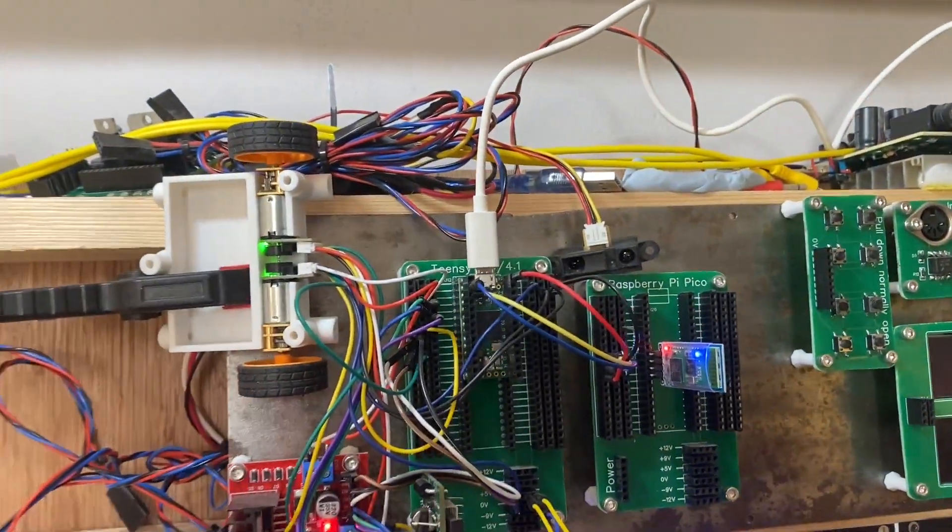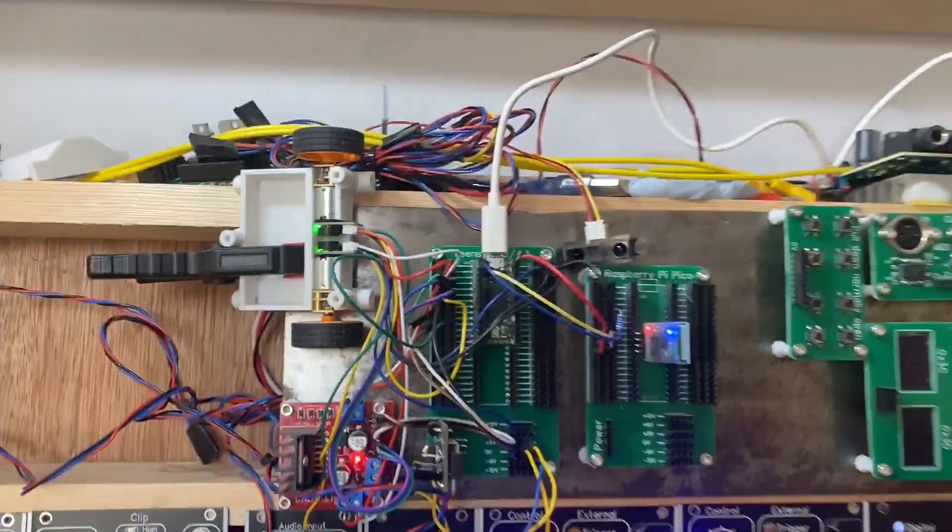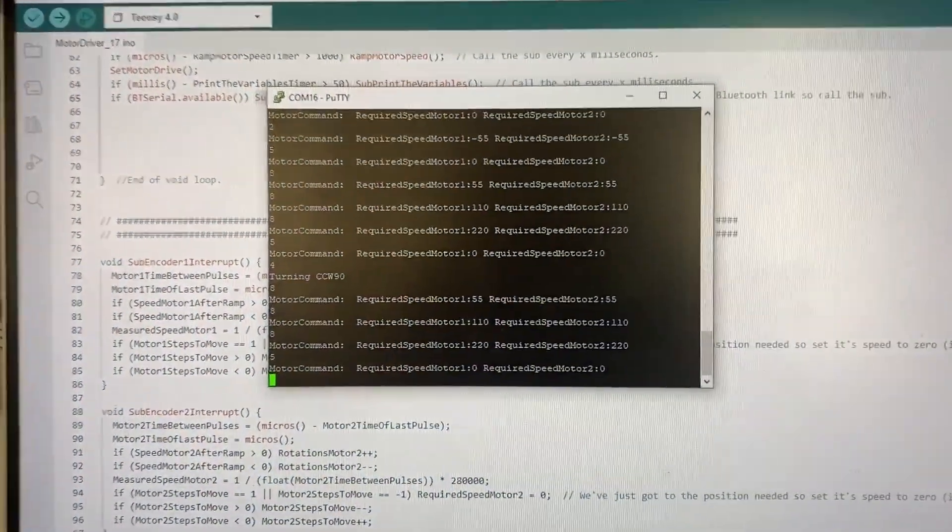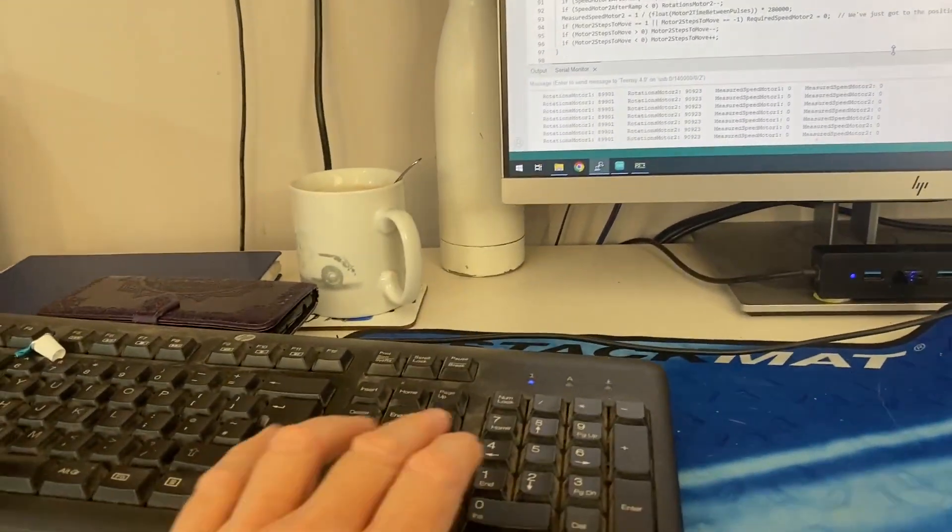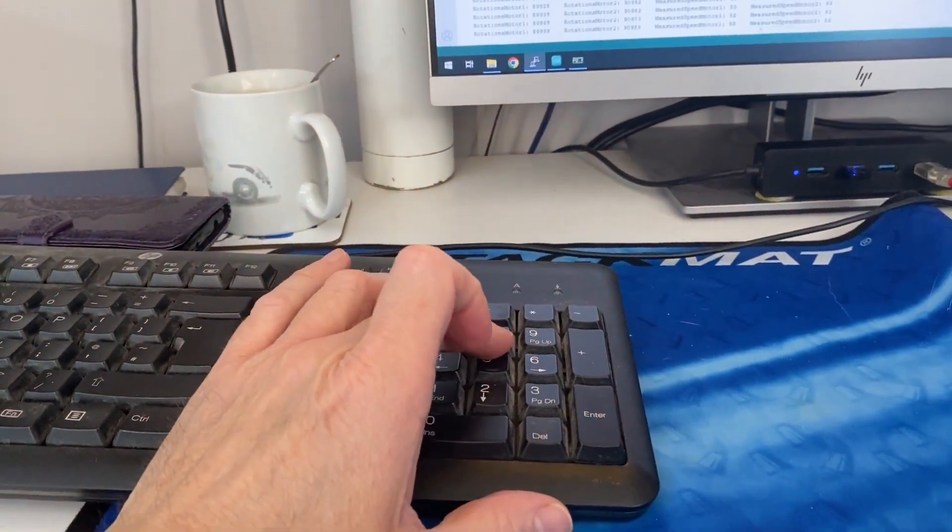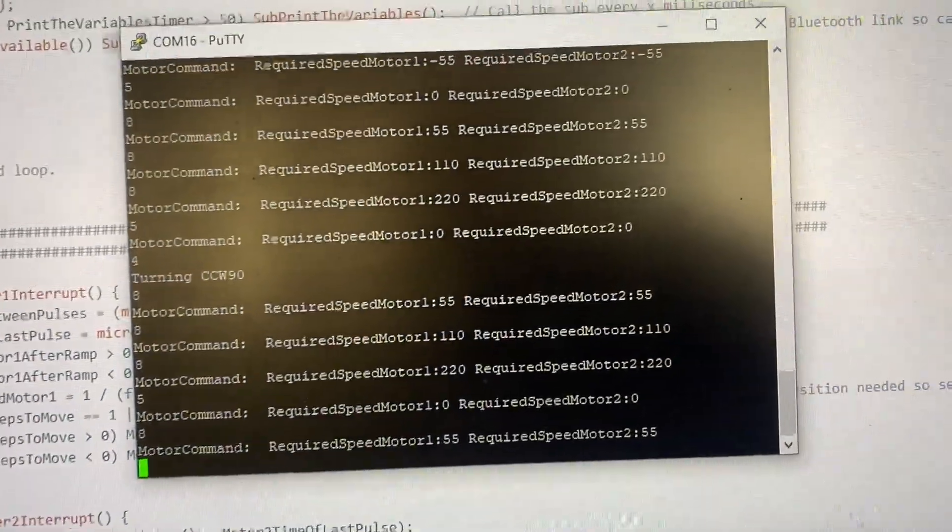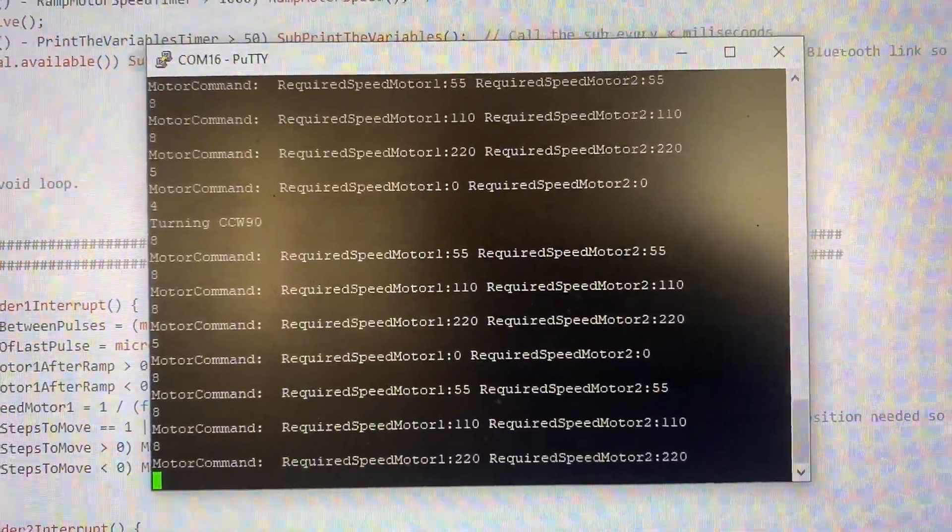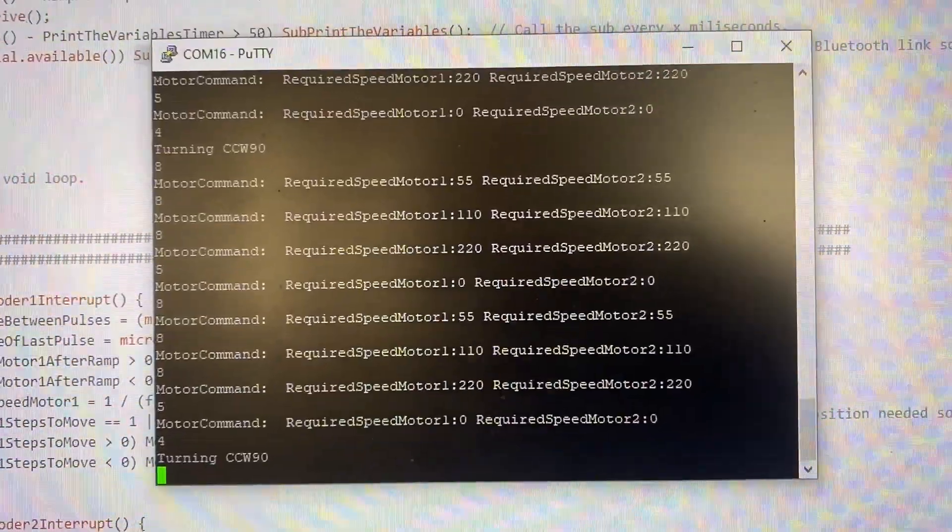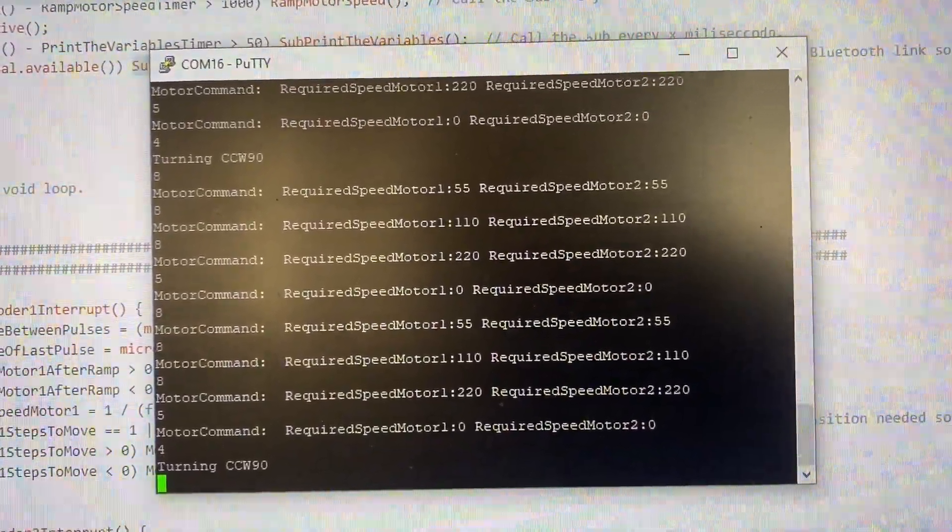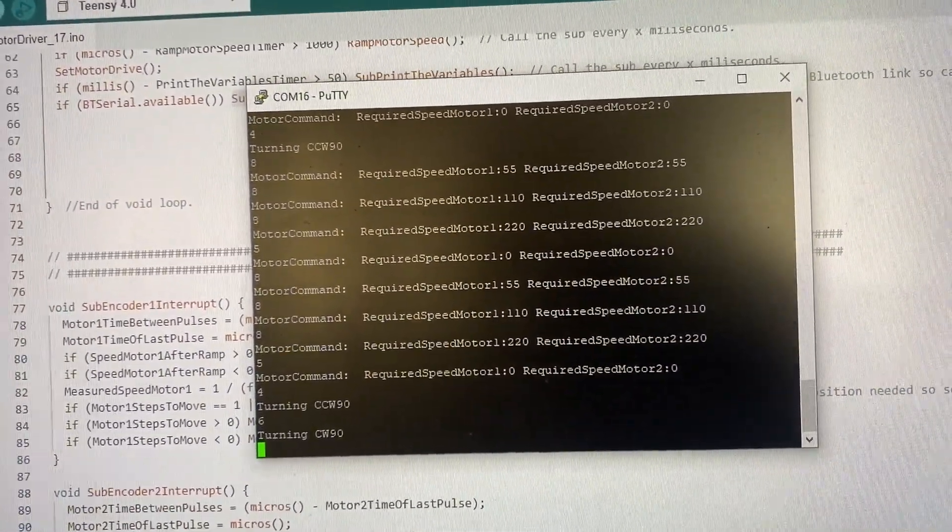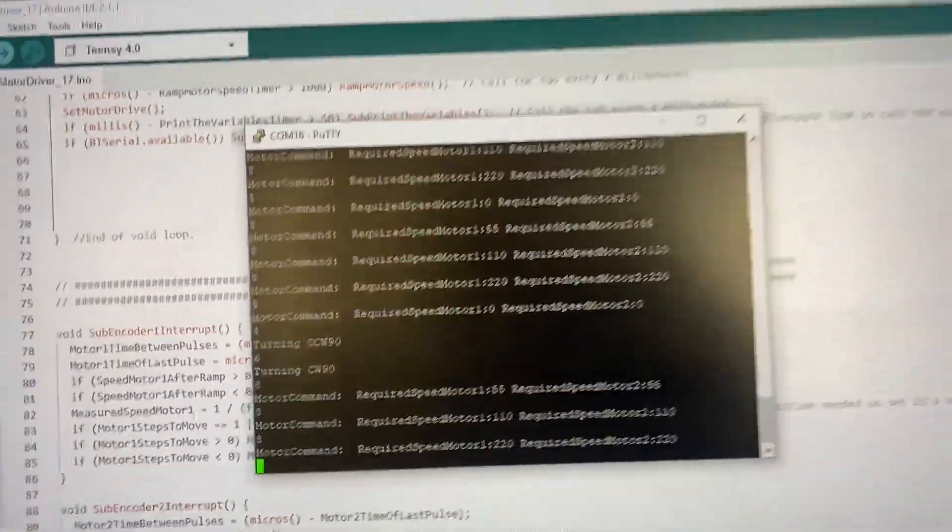So I talk to it with Putty. When I push the buttons on the keyboard, that sends commands to the mouse and I can control how fast the motors go. I can make it turn left and I can make it turn right by 90 degrees. I'll put it on fast - that's full speed.